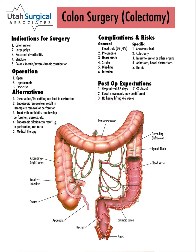The different approaches to taking out the colon are open, which means a large incision usually down the middle of the abdomen; laparoscopic or robotic, which involve several small incisions. Sometimes with the laparoscopic approach, about a seven to eight centimeter incision is made and a hand is placed into the abdomen to help manipulate the tissues — that's called the hand-assisted laparoscopic approach. They all have their advantages and disadvantages, and your surgeon will tell you which approach they recommend based on your disease process.